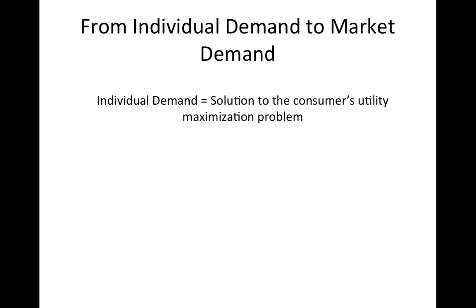You have learned that a consumer's demand for a good is the result of solving the consumer's utility maximization problem. Normally, we represent an individual's quantity demanded with the lowercase letter X. The subscript denotes the good. Typically, demand for the good is a function of the price of the good, the prices of other goods, and income, which is denoted with the letter M.